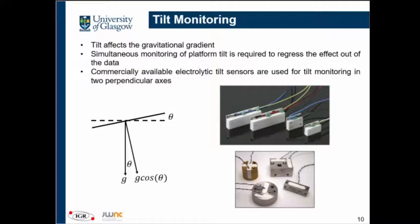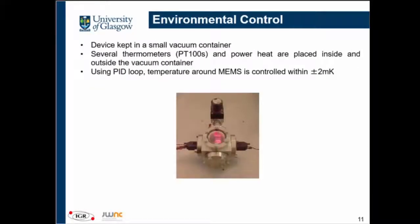There is another problem with gravimeters: they are very susceptible to tilt. If the ground is tilting, you are not measuring g — you are measuring a component of g. So it is very important to either have a platform that is stabilized actively or passively, or to monitor tilt and regress it out of your data. We chose the latter approach, using commercially available 50-pound electrolytic tilt sensors. We placed two of them to monitor ground tilt along two orthogonal axes.